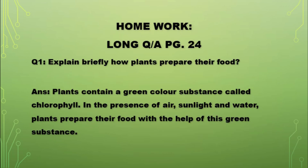Students, now I am giving you some homework. Take out your book and copies. Open your copies and make a heading for long question answers. Write question number one from your book page number 24: Explain briefly how plants prepare their food. Answer: Plants contain a green color substance called chlorophyll. In the presence of air, sunlight and water, plants prepare their food with the help of this green substance. Copy this question and answer into your classwork copy with neat and clean handwriting.